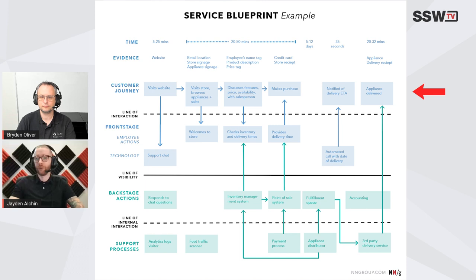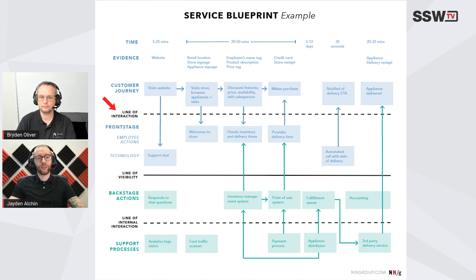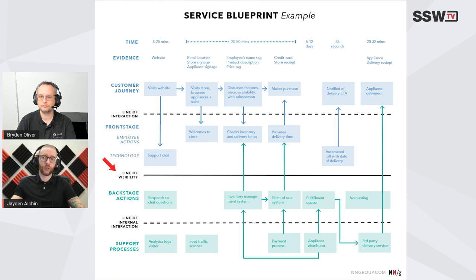We also have employee actions, the technology involved, backstage back-end actions, and support processes. Along the left, the line of interaction at the top represents interactions between the user and front-end technologies — the things the user can see and interact with. Then we have the line of visibility, color-coded blue and green, separating the front-end visible things from the back-end things powering it. It's a really helpful artifact for representing the processes and people involved.